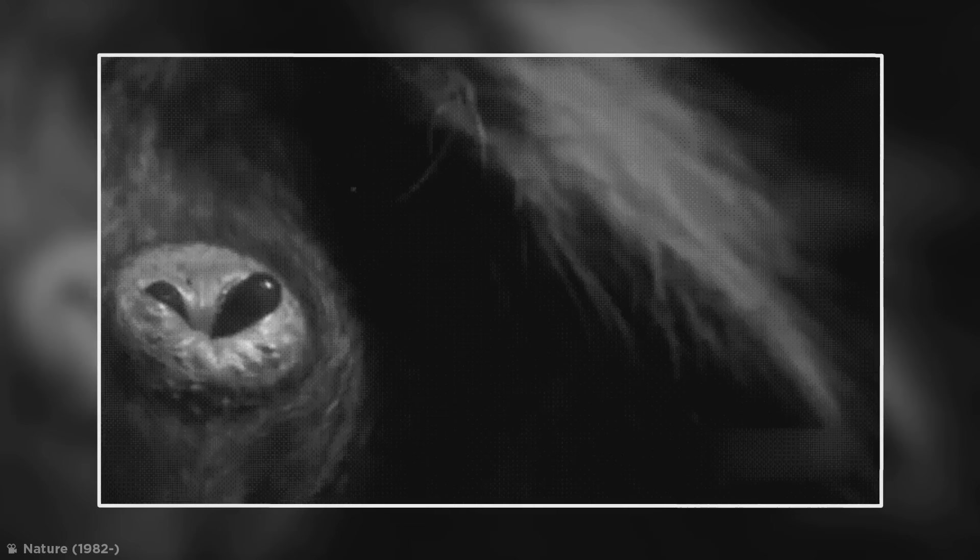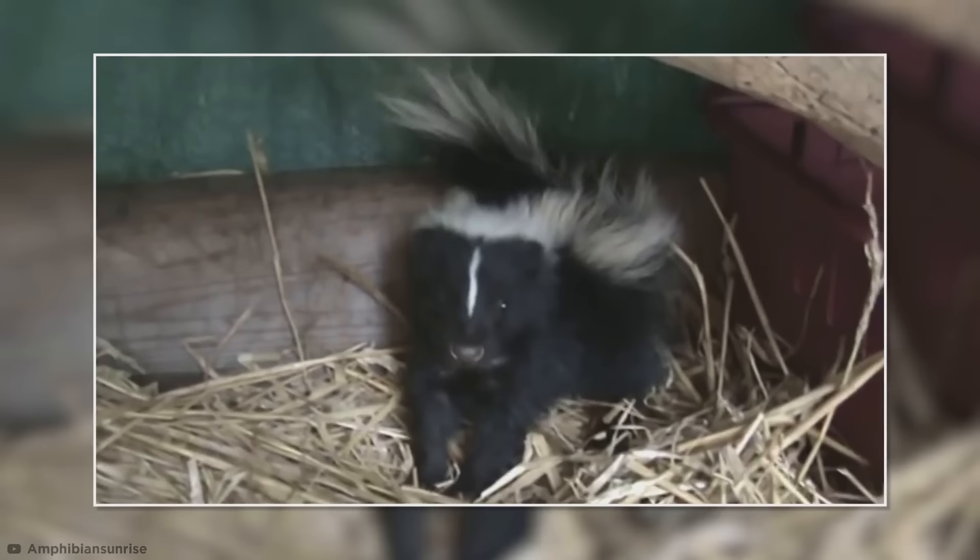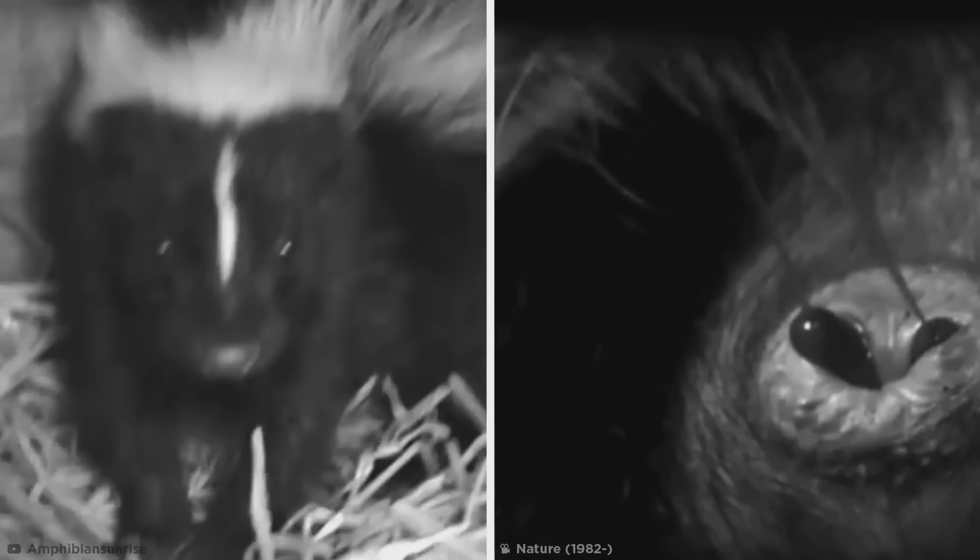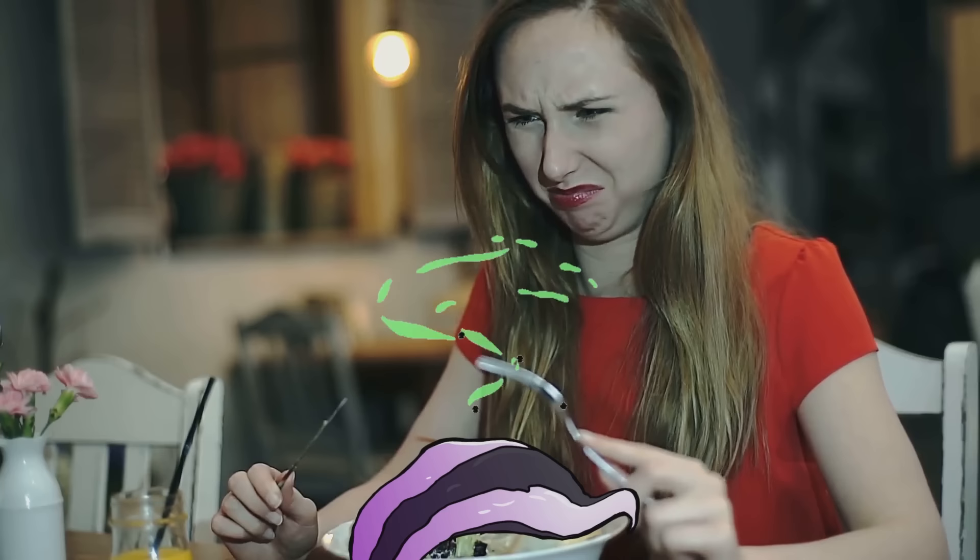Thankfully for us clumsy humans, skunks will only use their spray as a last resort. First and foremost, they rely on their black and white coloring as a way of sending a message that says, don't mess with me, fella. They'll also do a little defensive dance and rely on a series of hisses and foot stomps like a toddler throwing a tantrum. But if all else fails, it's time to bring out the big guns. Biologists have noted that skunks rarely die from being killed by predators so it seems to work. Then again, who'd want to eat something that just farted in your face?